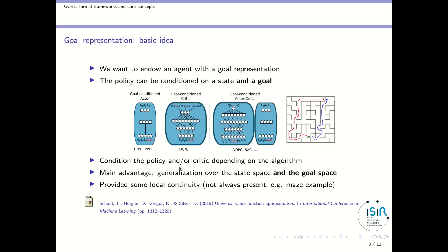The main advantage of doing this with neural networks is that it provides generalization over both the state space and the goal space. But you have generalization only if there is some local continuity between states and between goals, and that's not always the case. For instance, in this maze example, we have two goals that are very close to each other but the trajectories to reach them are completely different, so you should not generalize over those two close goals. Learning how to reach one will not help you learn how to reach the other, and we will see this with the question of transfer learning later on.